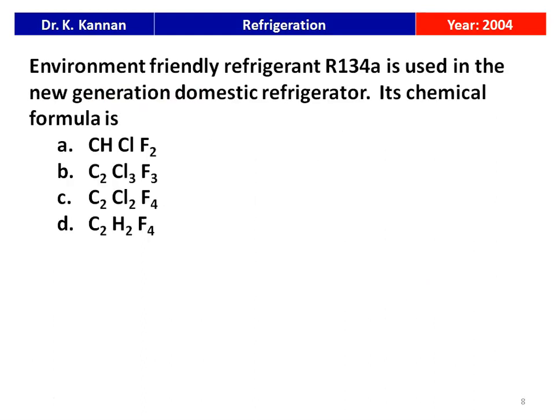The next question is also from the 2004 question paper. The environment-friendly refrigerant R134A is used in new-generation domestic refrigerators. Its chemical formula is: CHClF2, C2Cl3F3, C2Cl2F4, or C2H2F4. The correct answer is C2H2F4. The chemical formula for R134A is C2H2F4.